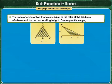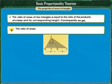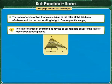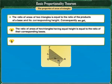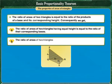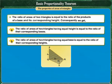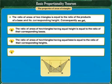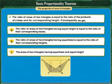Consequently, we get three more properties. The first one is about triangles having equal height — it states that the ratio of areas of two triangles having equal height is equal to the ratio of their corresponding bases. The second states that the ratio of the areas of two triangles having equal base is equal to the ratio of their corresponding heights. The third is that the areas of two triangles having equal base and equal height are equal.